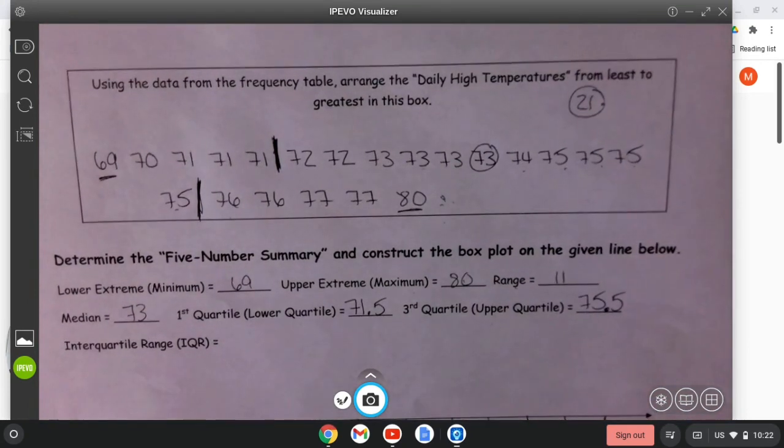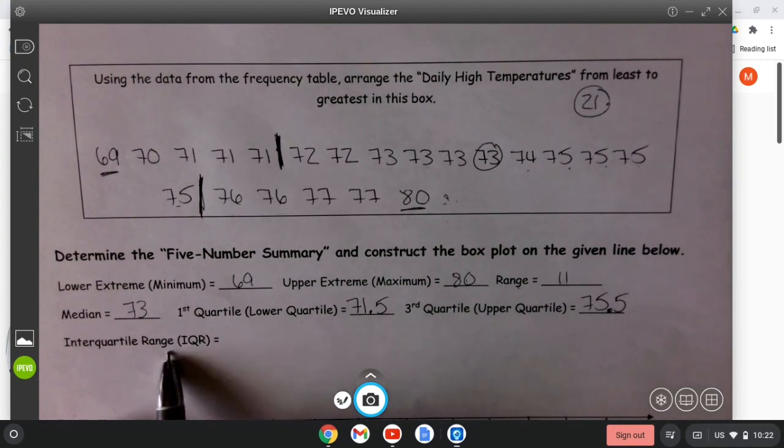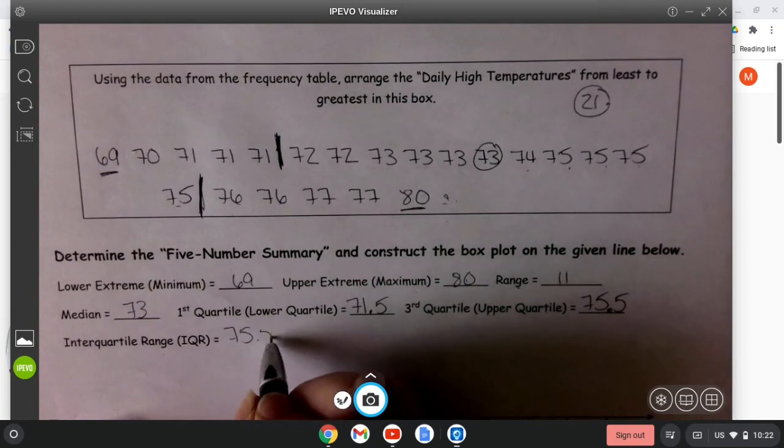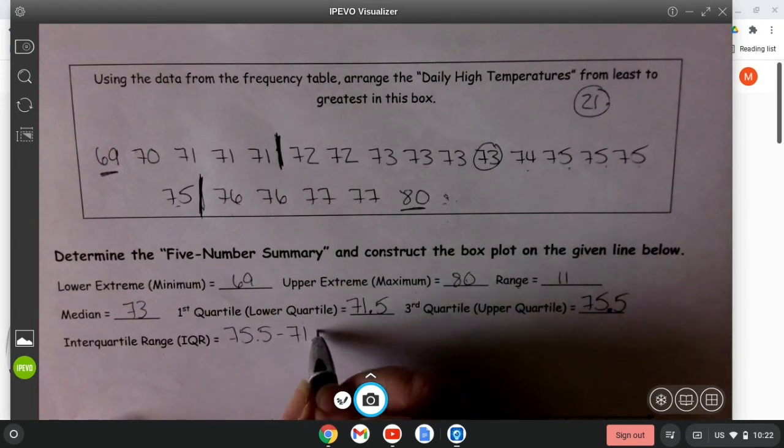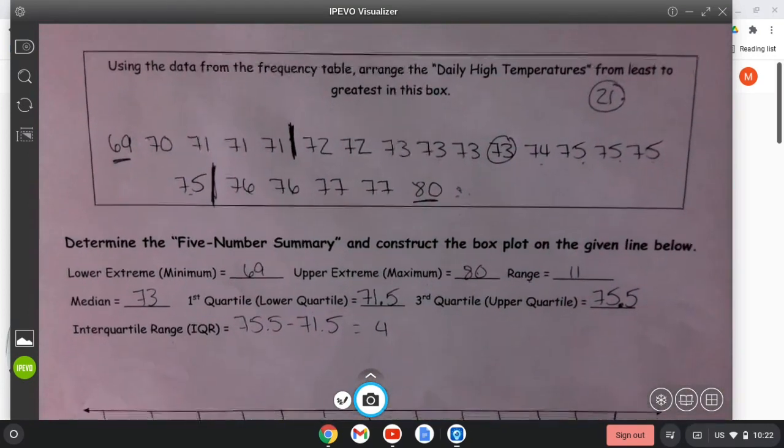The last thing that we need to determine is the interquartile range, which we take the third quartile which is 75.5 and subtract the first quartile from that, so 4 is going to be my interquartile range.